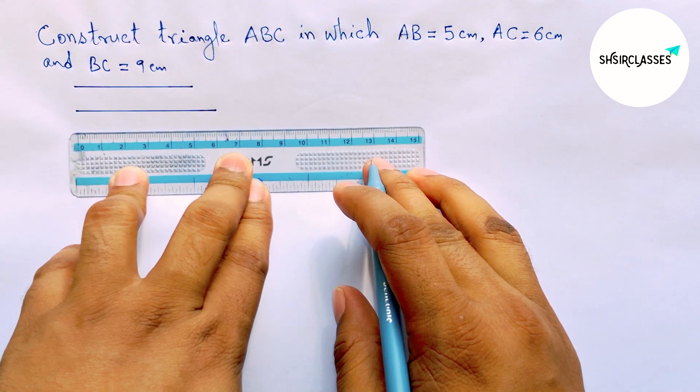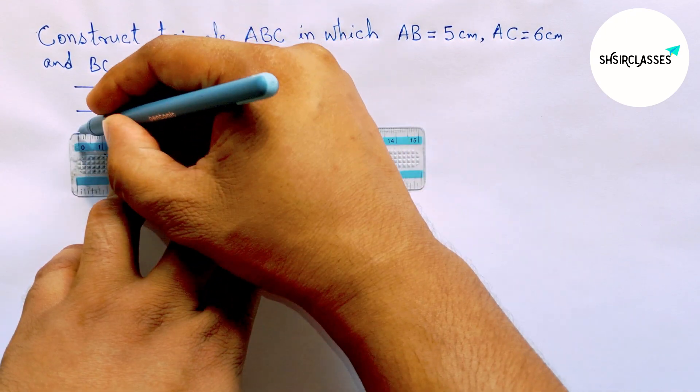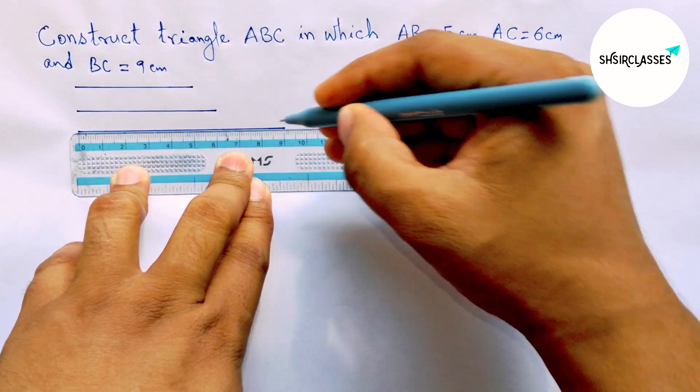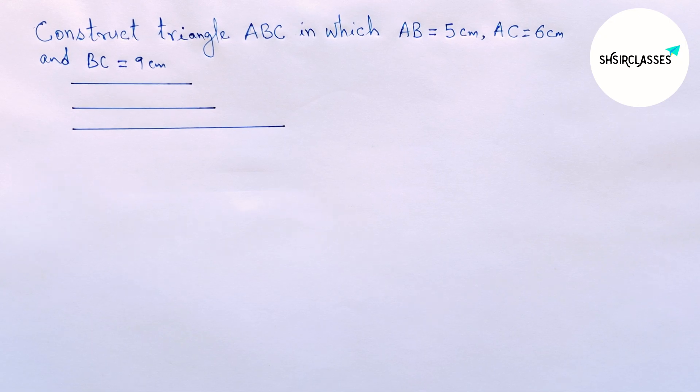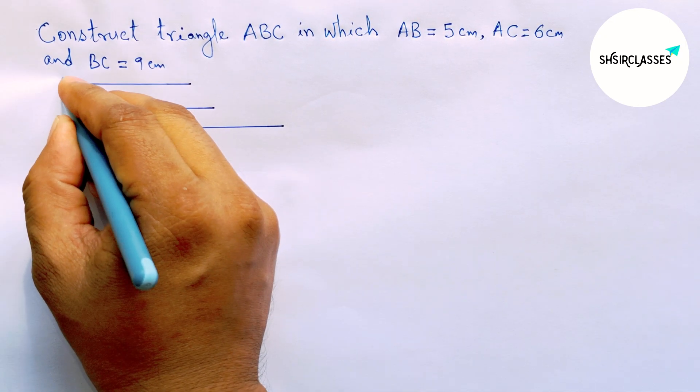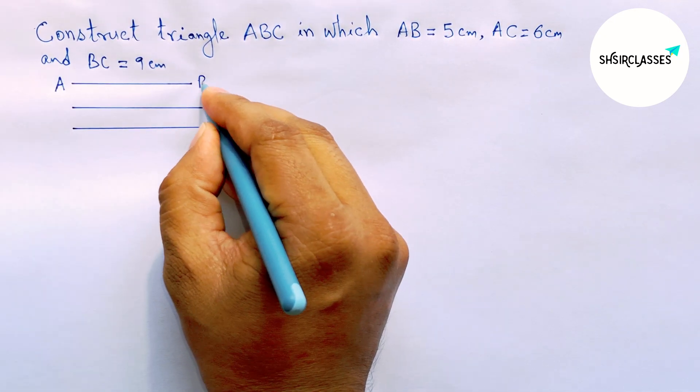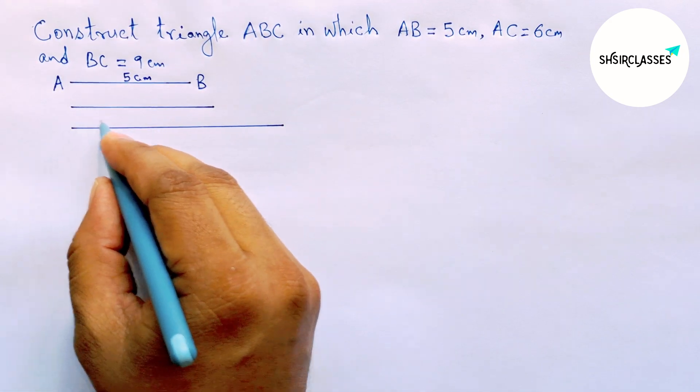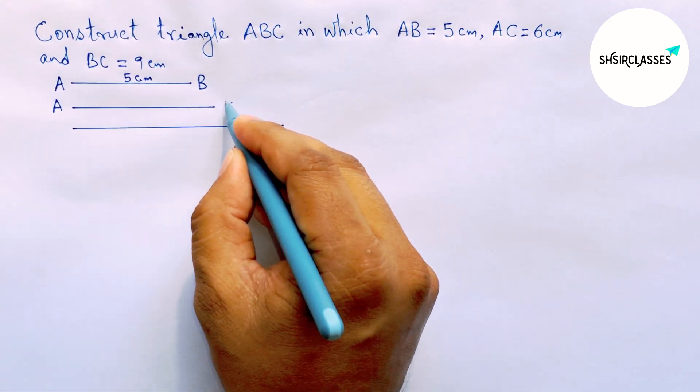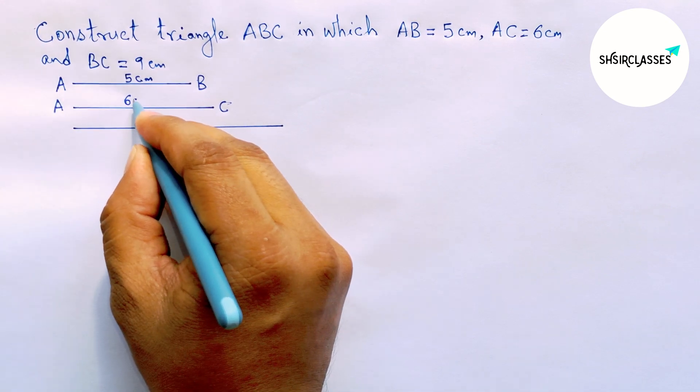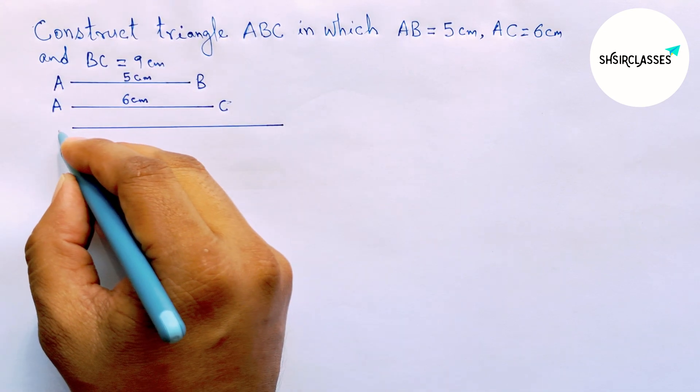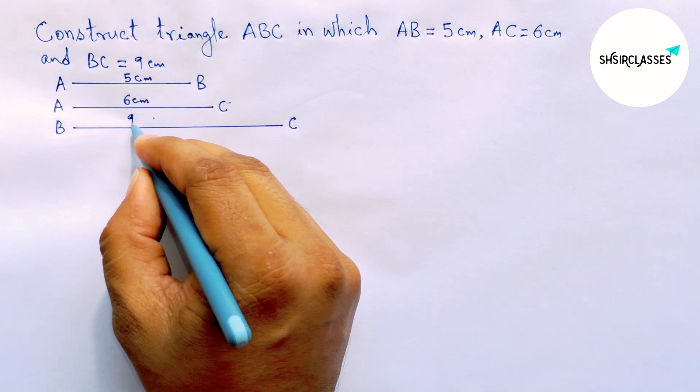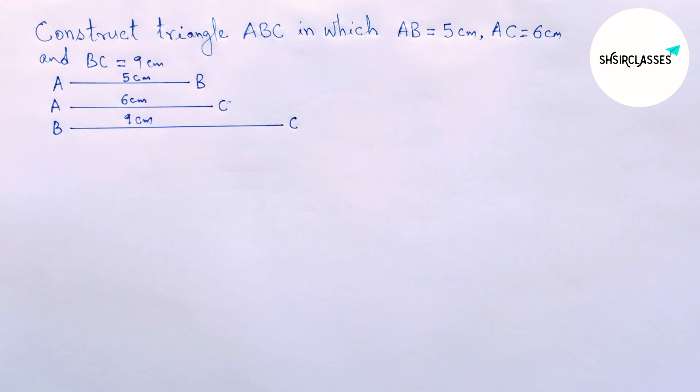Last drawing nine centimeter line segment. So this is a nine centimeter line segment. Next labeling AB, so AB equals five centimeter. Next labeling here AC, AC equals six centimeter, and last one here BC, so BC equals nine centimeter.